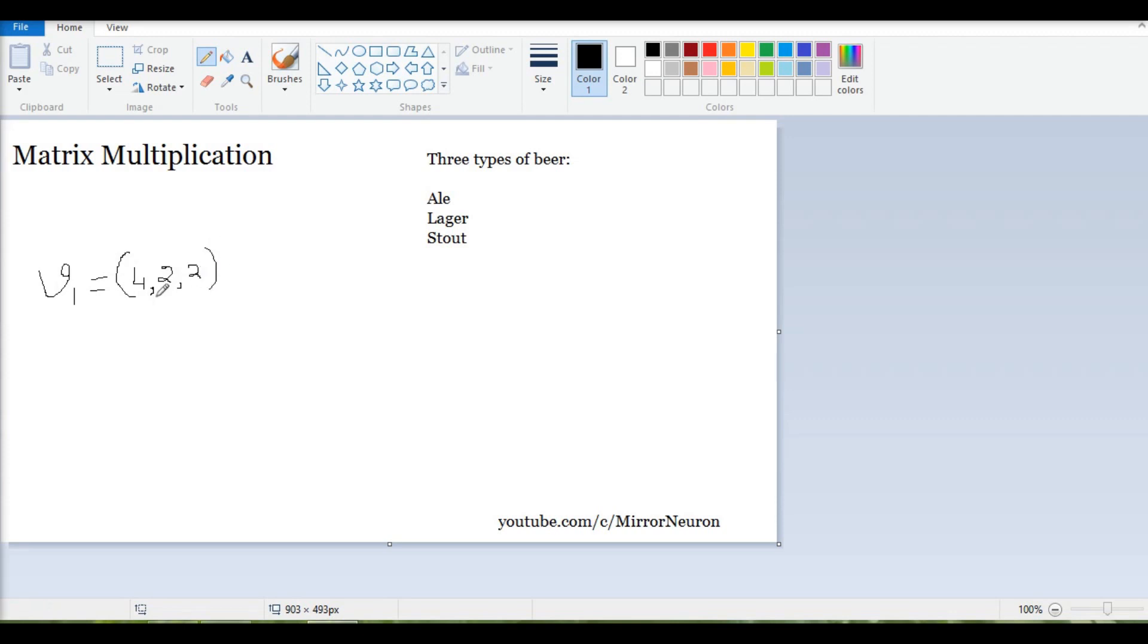And my friend, he sold three ale, two lager, and four stout. Now these are individual vectors and they determine the number of each type of beer we sold. So this is ale, this is lager, and this is stout - similarly for my friend.